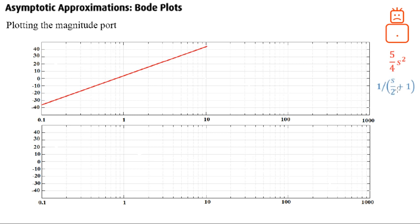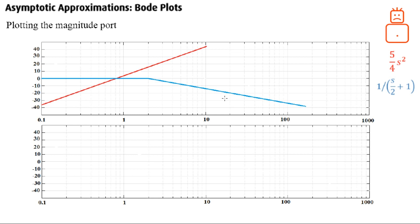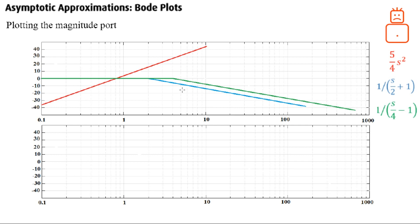Next, for the pole at plus 2 rad/s: since it's a pole, it contributes a slope of minus 20 dB/decade starting at its breakaway frequency of 2 rad/s. For the pole at minus 4: same magnitude slope of minus 20 dB/decade, starting from 4 rad/s. For the pole at minus 10: also minus 20 dB/decade starting from 10 rad/s.